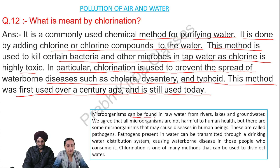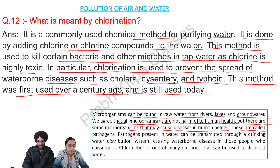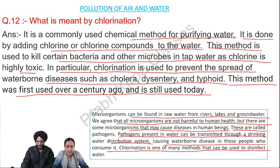Microorganisms can be found in raw water from rivers, lakes, and groundwater. Not all microorganisms are harmful to human health, but some may cause diseases in human beings — these are called pathogens. Pathogens present in water can be transmitted through a drinking water distribution system, causing water-borne disease. Chlorination is one of many methods that can be used to disinfect water.